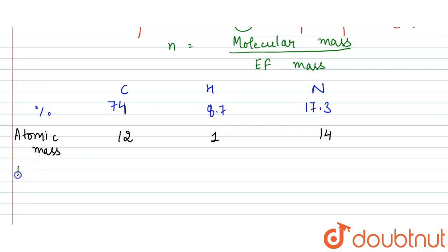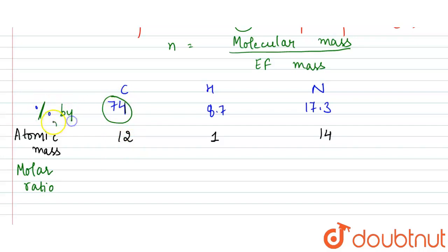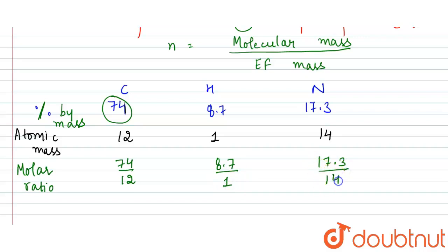Now we will calculate the molar ratios. The molar ratio is given mass divided by atomic mass. Since the question gives percentages by mass, we use: 74/12 for carbon, 8.7/1 for hydrogen, and 17.3/14 for nitrogen.